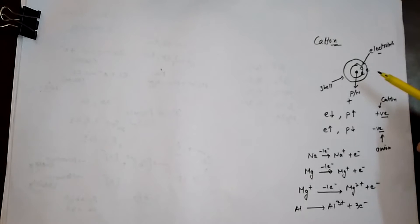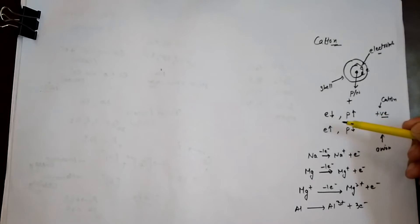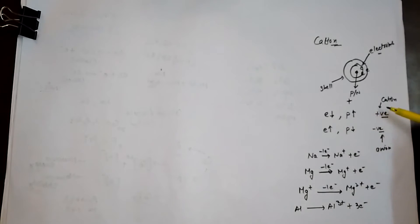If there is a loss of electrons, the number of electrons becomes less than that of a normal atom while the protons remain the same. When we count, the number of electrons is less and the number of protons remains the same, so overall the quantity of protons increases as compared to the number of electrons. Whenever this situation arises, we say there is a formation of a positive ion, called a cation.